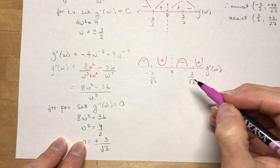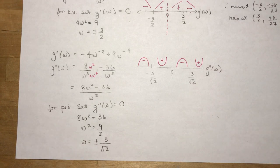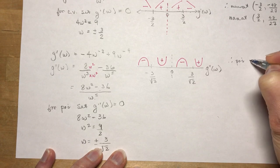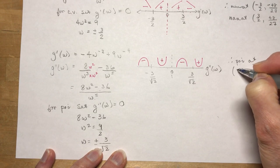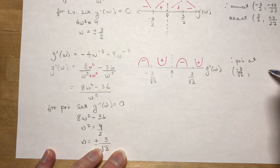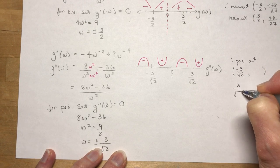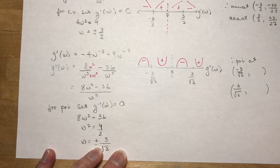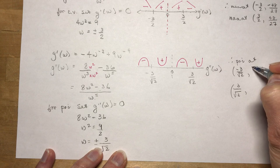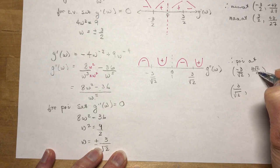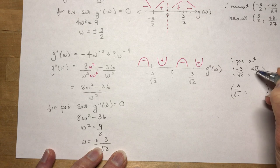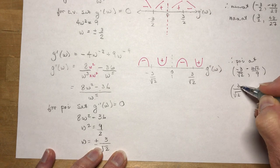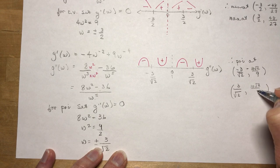These are going to be points of inflection. Therefore, points of inflection at w = 3/√2 and w = −3/√2. Remember to plug these back into the original function to get the y-coordinates. The y-values are ±10√2/9 — so the points of inflection are (3/√2, 10√2/9) and (−3/√2, −10√2/9).